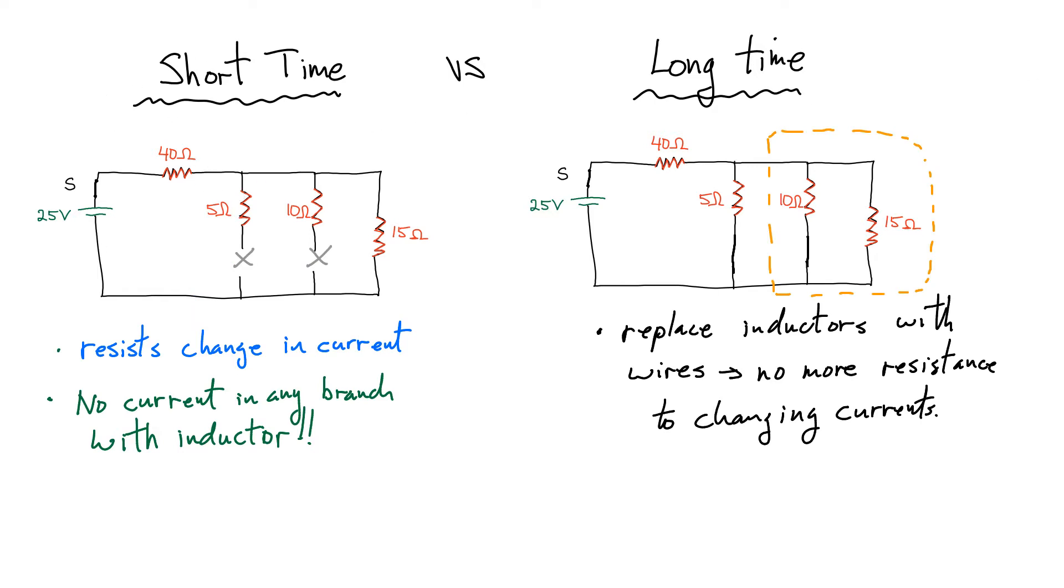If I define the current I, well it goes from the positive, there's no current flowing down any of those branches, they have basically infinite resistance. There you have it, that's the single loop for the current, we call it I.